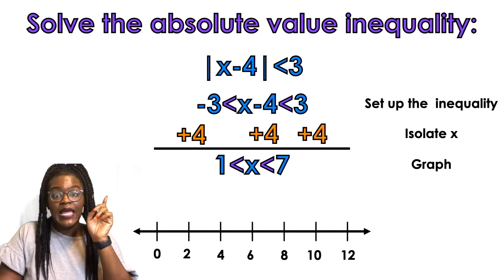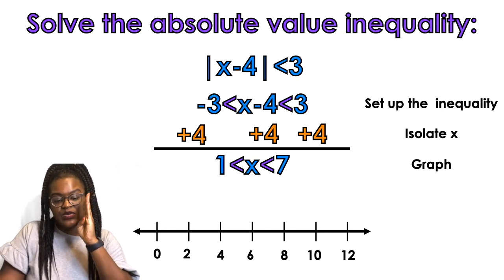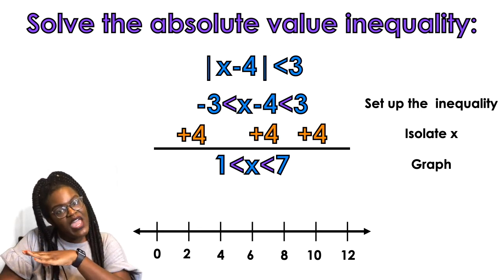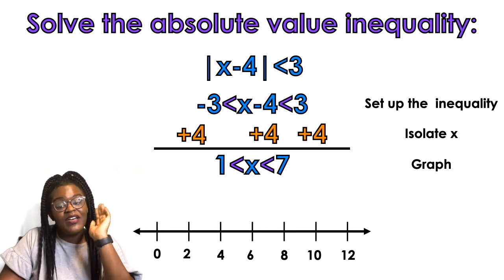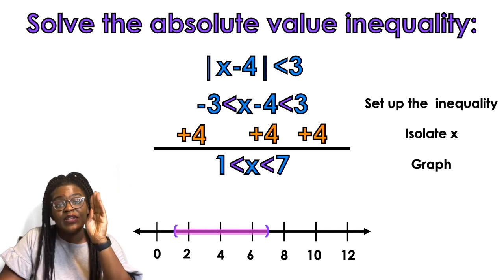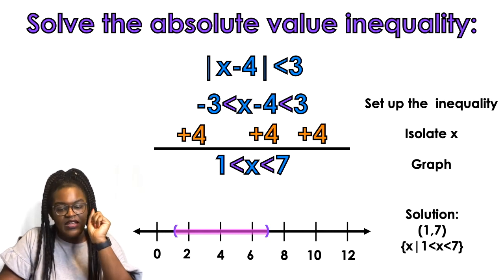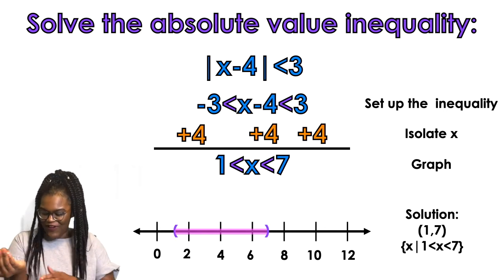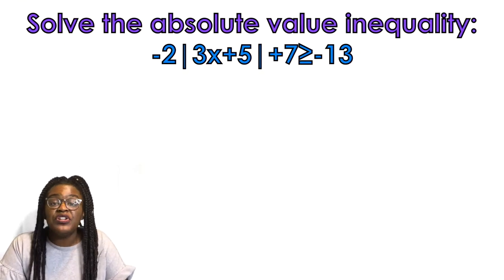Now that x is by itself, I'm going to graph. I set up my number line by skipping twos: two, four, six, eight, ten, twelve. My first number is one and my next number is seven. I'm going to use parentheses because my symbols are less than — if they were less than or equal to, I would use brackets. And I shade in the middle because it's an and inequality. That is my solution. Not that bad, right? That was example number one.